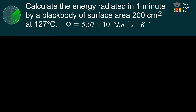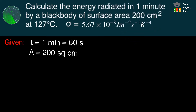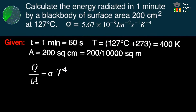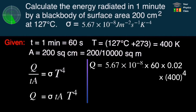Example 1: Calculate the energy radiated in one minute by a black body of surface area 200 square centimeters at 127 degrees Celsius, given Stefan's constant. Time is 60 seconds, area is 200 cm² converted to square meters, temperature is 127°C converted to Kelvin. Applying the Stefan-Boltzmann law and substituting all values, we get 1751.04 joules as the answer.